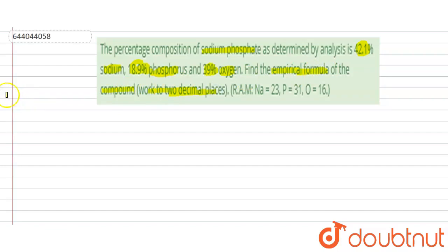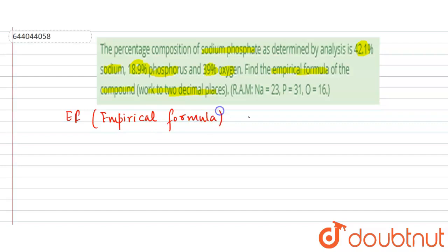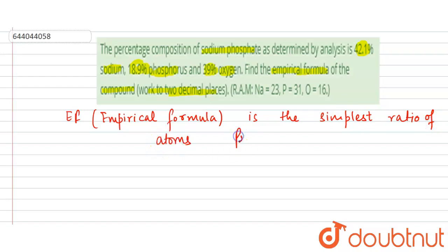The empirical formula is the simplest ratio of atoms present in a compound.